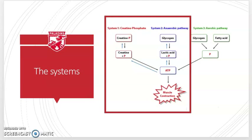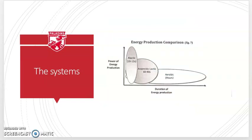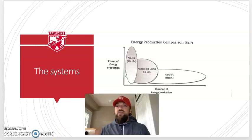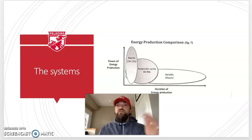This next chart is actually quite important. If you could understand this chart, that would be great. On the y-axis we have the total rate of energy production, or the power of energy production, for each system. On the x-axis we have the duration of energy production. The alactic or phosphocreatine system has about 10 to 12 seconds of work. The lactic system has about 60 to 90 seconds. And the aerobic system can work for hours and hours as long as you stay aerobic.